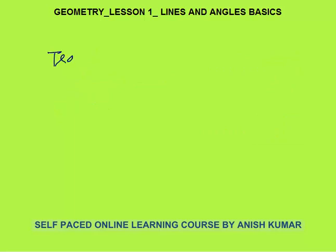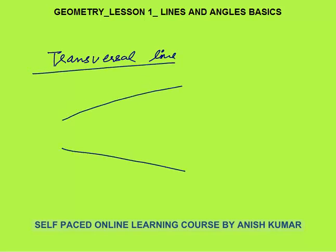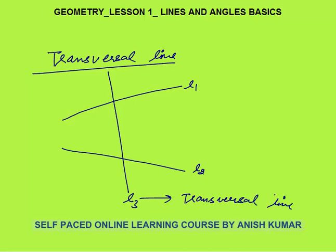Now we will discuss transversal lines. A transversal line is when two lines L1 and L2 are there, and one line L3 cuts them — this L3 is called the transversal line. When a transversal cuts two lines, eight angles will be formed. Numbering them: angles 1, 2, 3, 4 at the first intersection and angles 5, 6, 7, 8 at the second intersection.